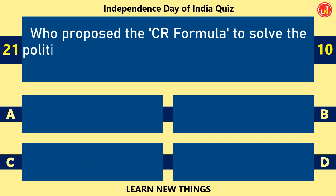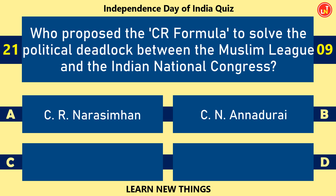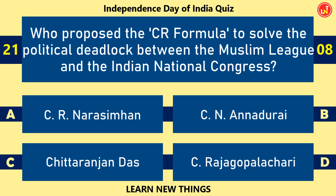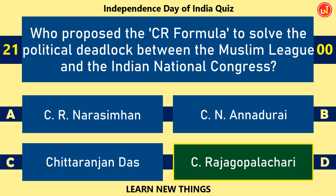Who proposed the CR formula to solve the political deadlock between the Muslim League and the Indian National Congress? C. Rajagopalachari.